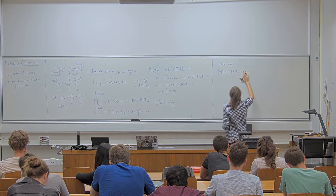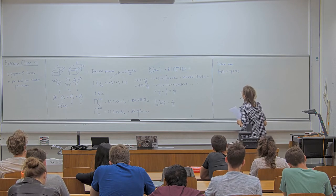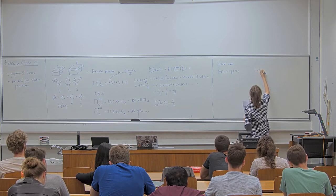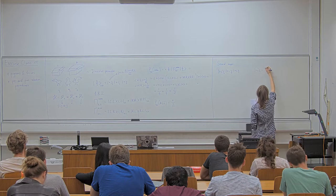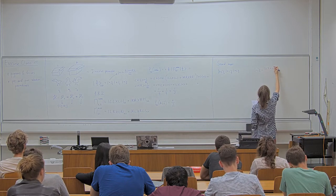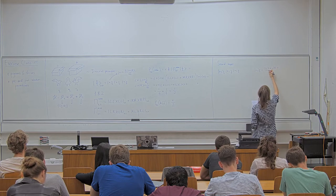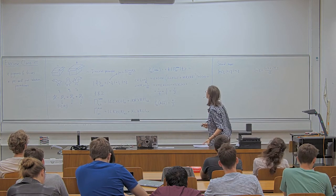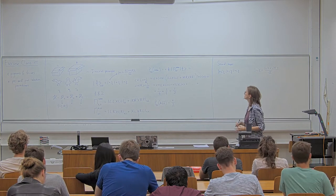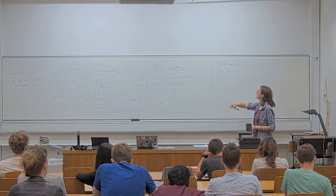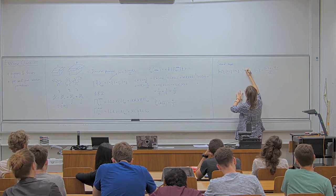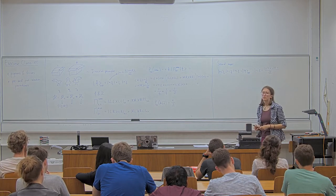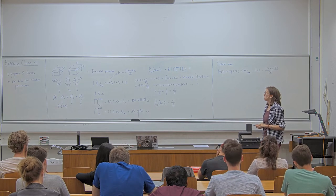We post-select in the basis plus-i for each particle — this is the eigenbasis of the y operator for each particle. Plus-i is just (L + iR) / sqrt(2). Then we can still, given the preparation state Phi and this post-selected state Psi, ask the question of whether particles 1 and 2 are in the same box.